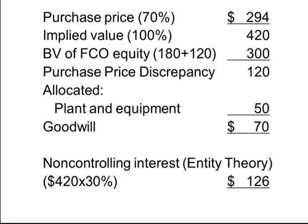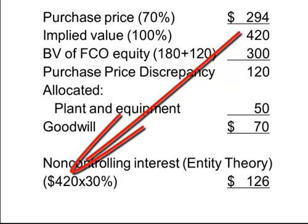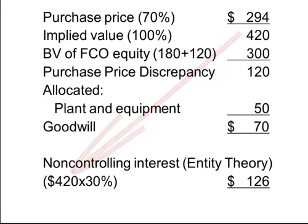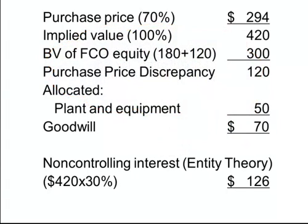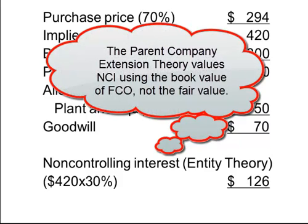This is the non-controlling interest, and it is classified as part of shareholders' equity in Parent Corporation. At acquisition, non-controlling interest is established using what is called the Entity Theory, which suggests that the acquisition of control by Parent Corporation represents a valid valuation of all the equity of the entire entity. Thus, the non-controlling interest is initially set up using the same implied value as was used for PICO's 70% interest. However, if the company is publicly traded, we may have a more accurate value of the non-controlling interest, which may be different than the implied value — in which case we would use that for the shares we don't own. In different countries and different periods of history, non-controlling interest has been valued on the basis of other accounting theories, such as the parent company extension theory, yielding different results.